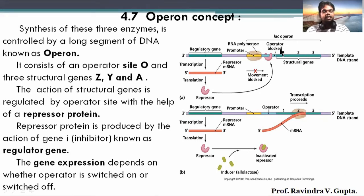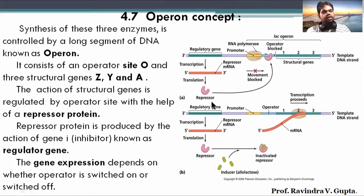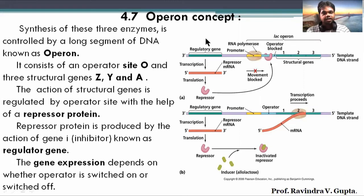Who decides whether the process starts? The operator decides. The operator region is super important — it is like a seat for a driver. If the driver is not there, the car cannot go. The operator region controls the whole process, and the repressor protein sits on the operator region. The repressor protein depends on how it is made through transcription and translation. In that DNA there is a small part — the regulatory gene — that forms this repressor protein. When transcription and translation of the regulatory gene occur, repressor protein is formed. If this protein binds to the operator region, DNA polymerase cannot proceed with transcription.